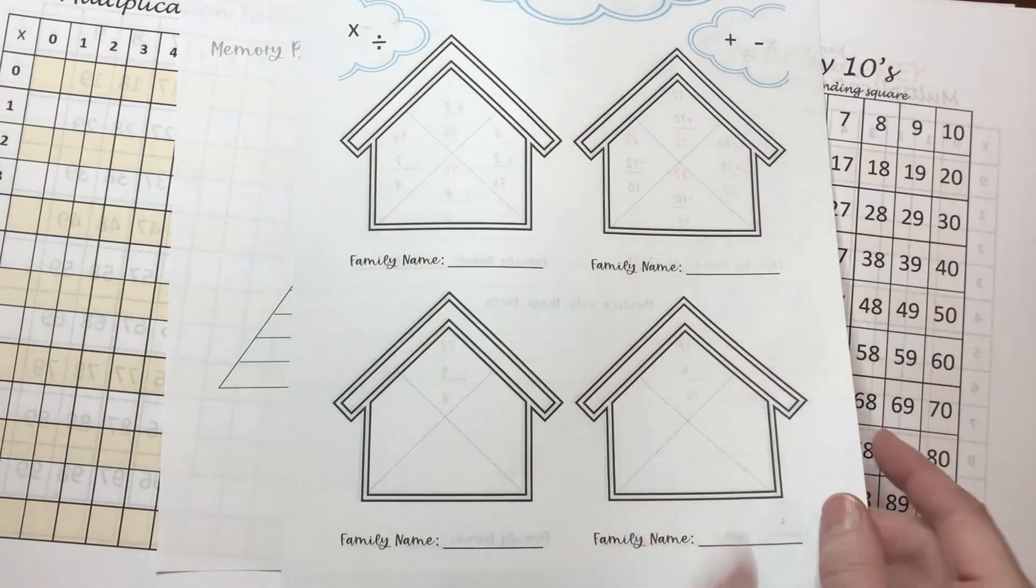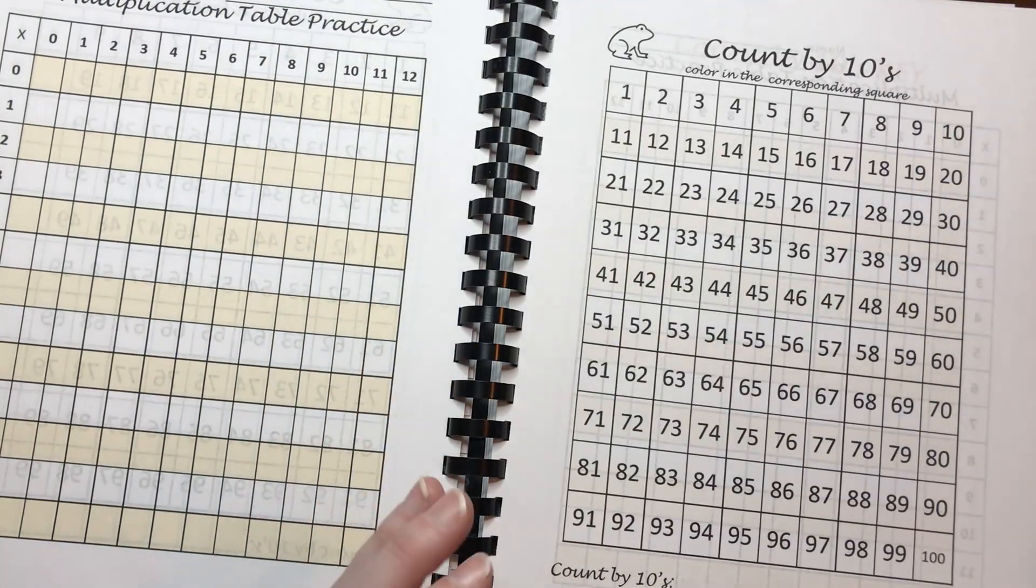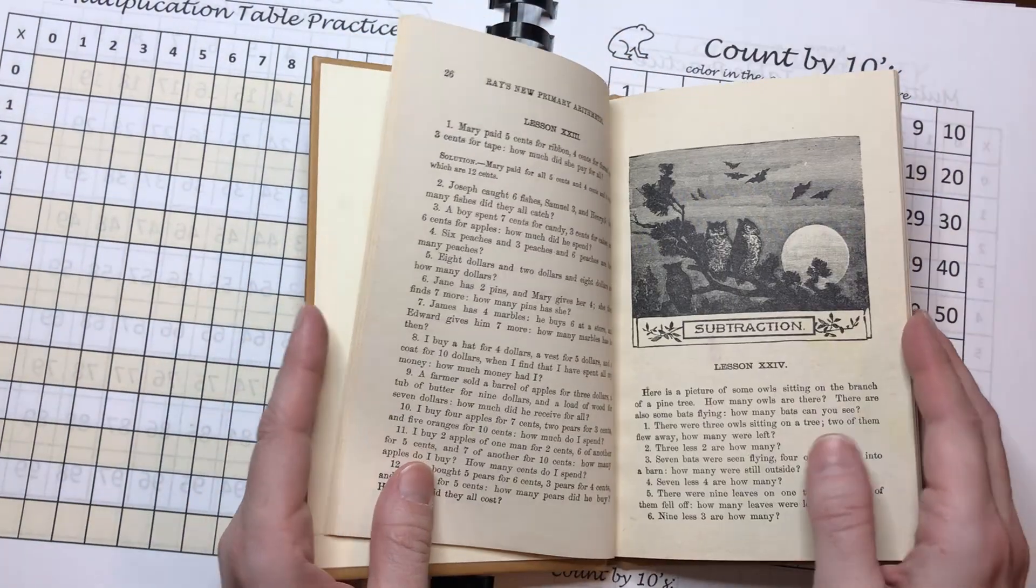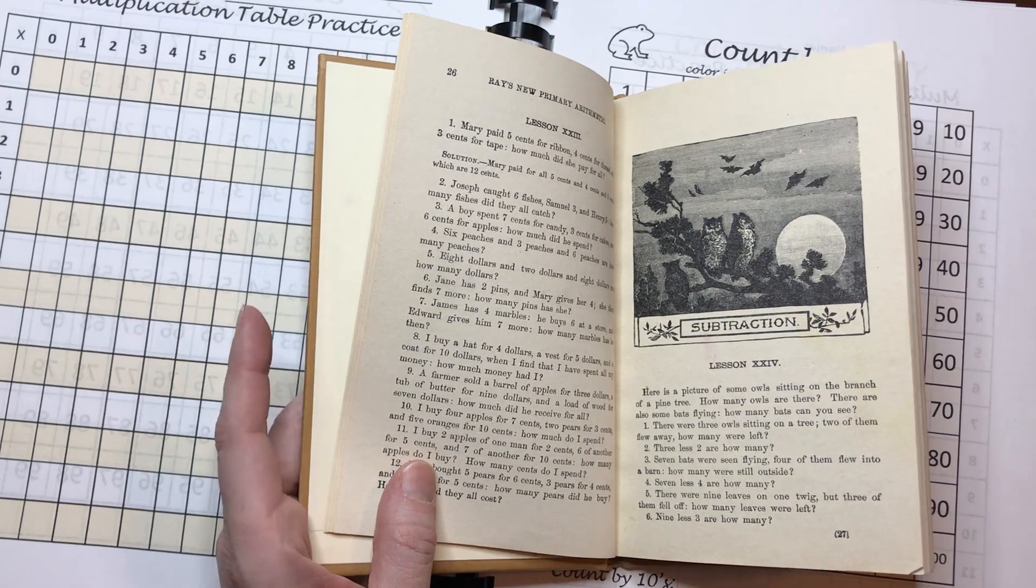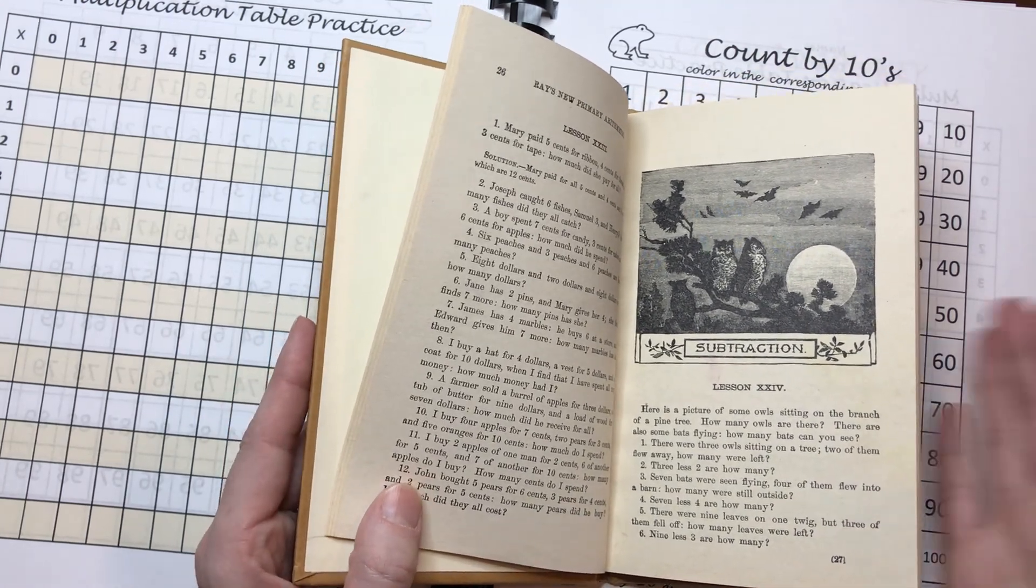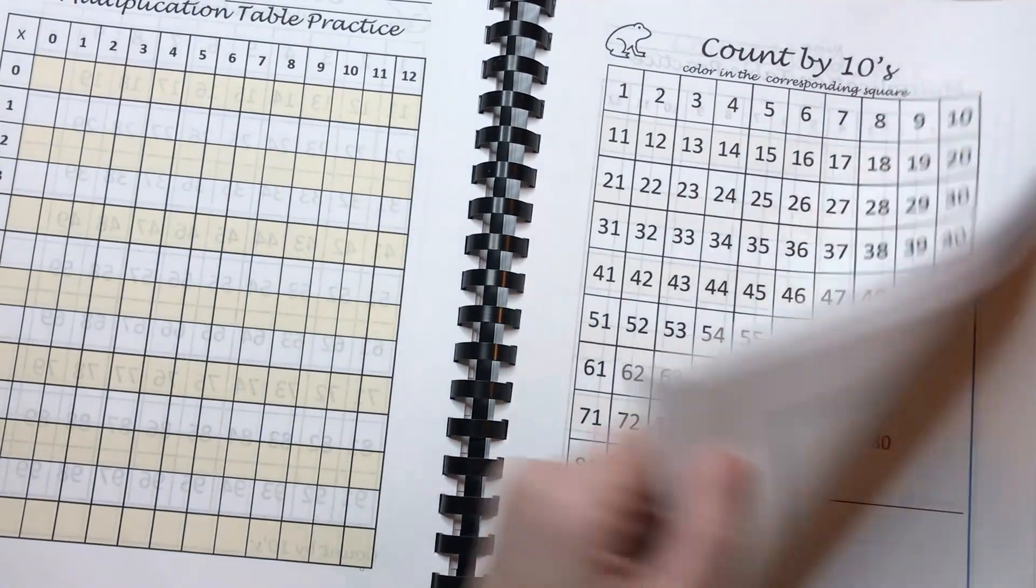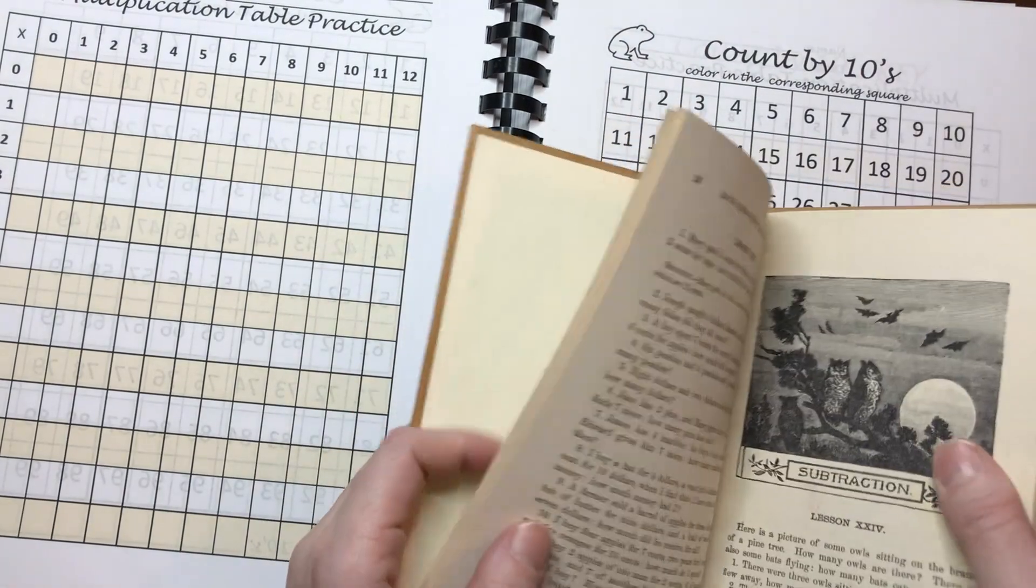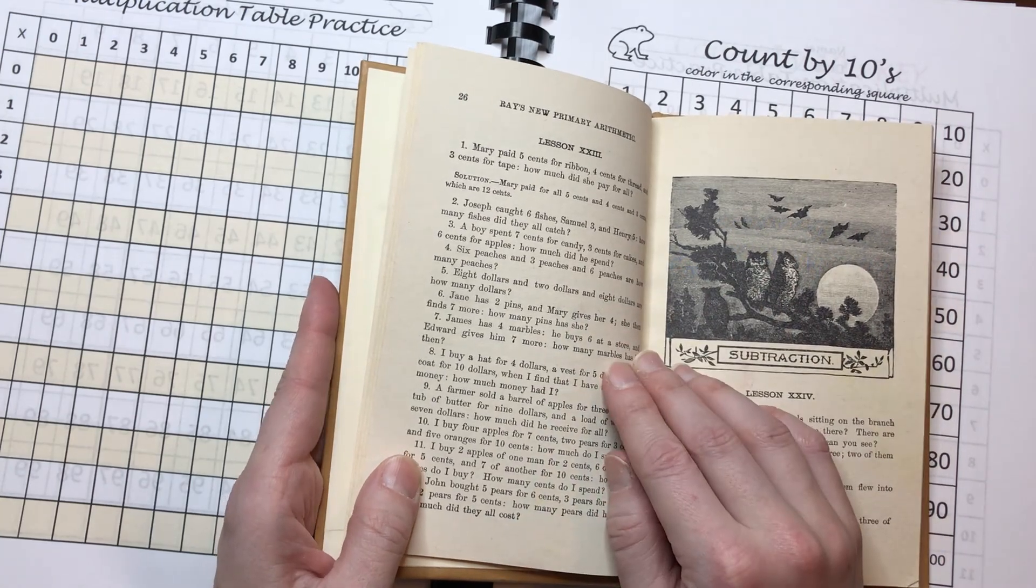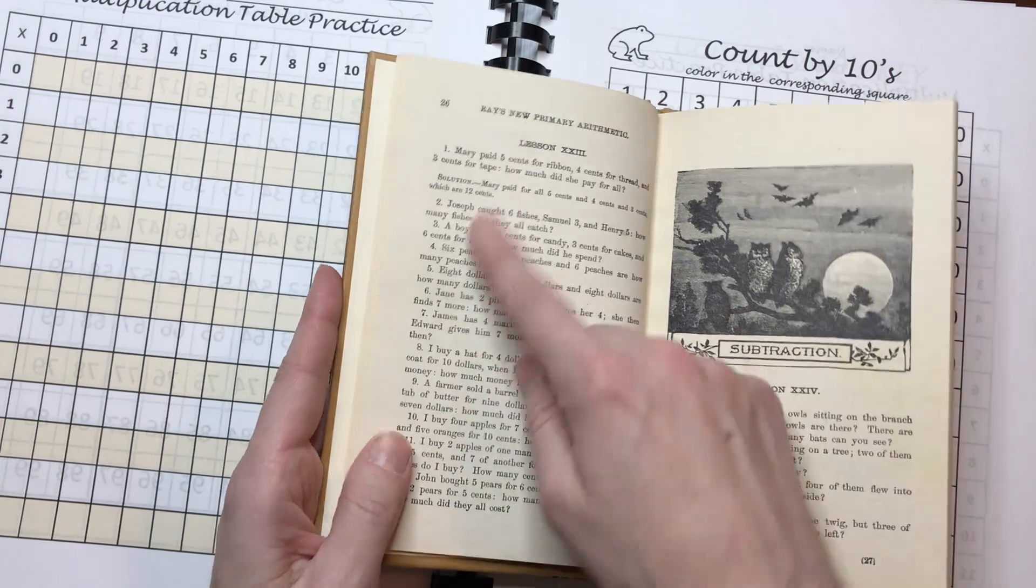I also do incorporate Ray's with it. Right now I actually have the Ray's workbooks that my oldest is working through, but I'm not sure that I want to repurchase those for my youngest. I may just, I'm putting this together now and I may just do the corresponding oral exercises in here or maybe have him write them out, work them out on a board, these questions here.